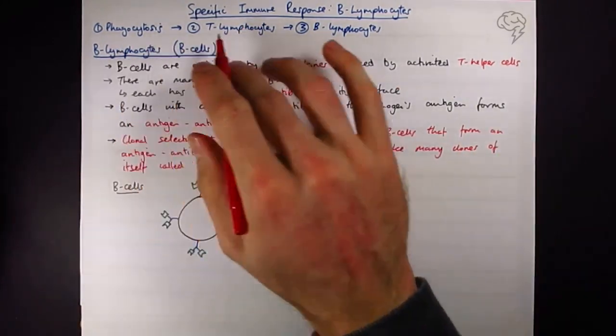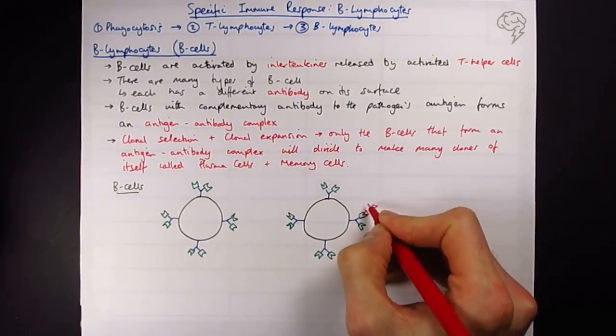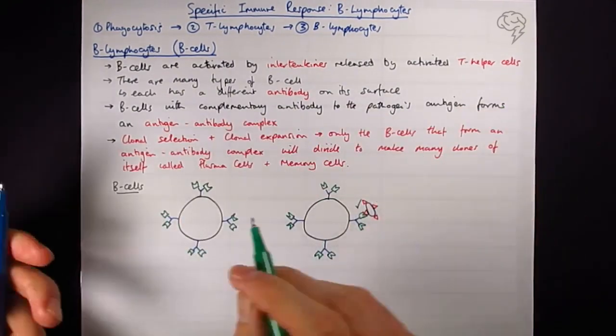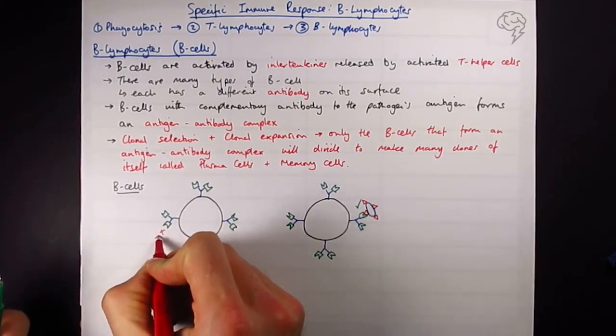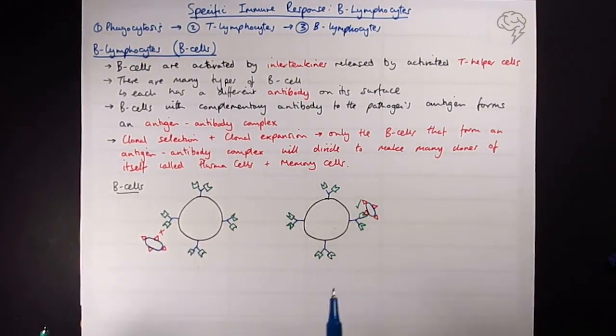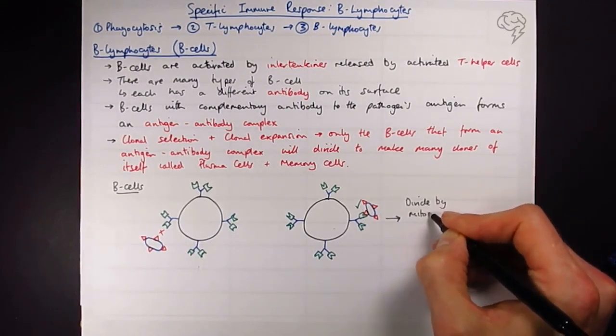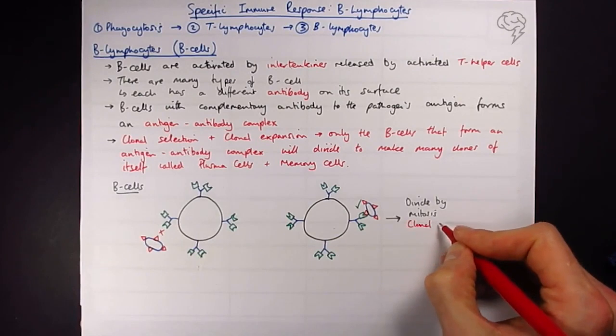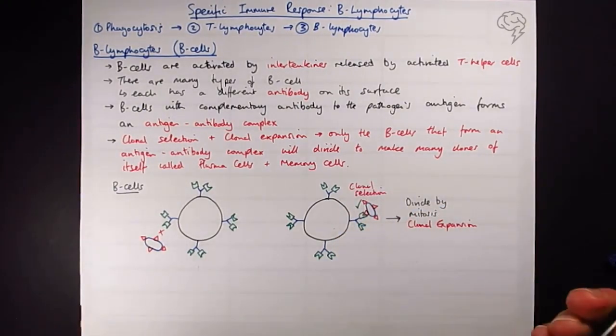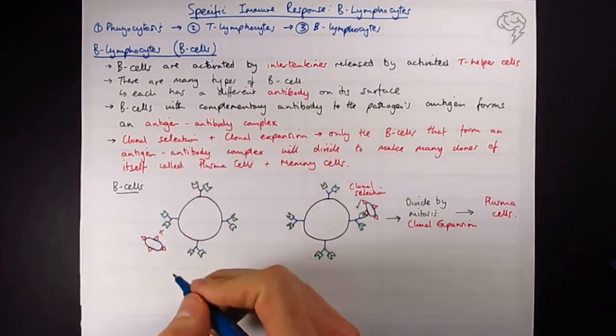If we say consistent with our pathogen's antigen, if we followed it through from phagocytosis, we're going to see that this one is going to be complementary. So it's selected by clonal selection. This one's quite rounded, it's not going to form an antigen antibody complex because they're different shapes. So this one is clonally selected and then it's going to divide by mitosis, and that process is called clonal expansion. This process here is clonal selection. And we're going to make many copies. The many copies are called plasma cells. They go into battle straight away. I'm actually going to put this down as a fourth stage.